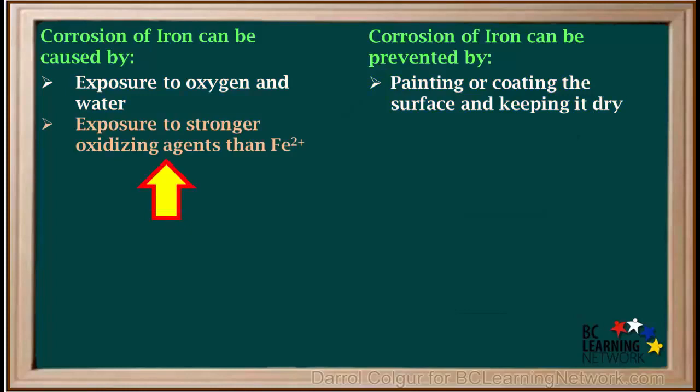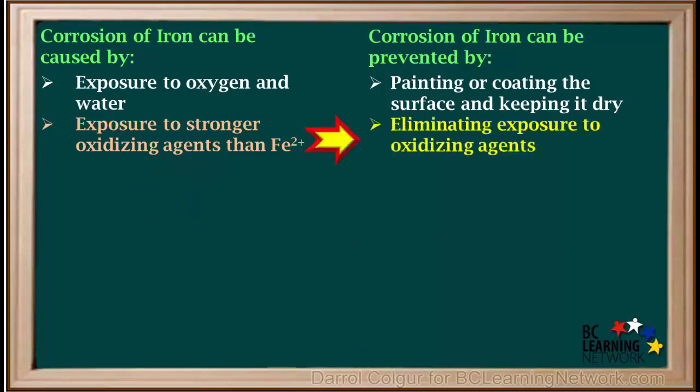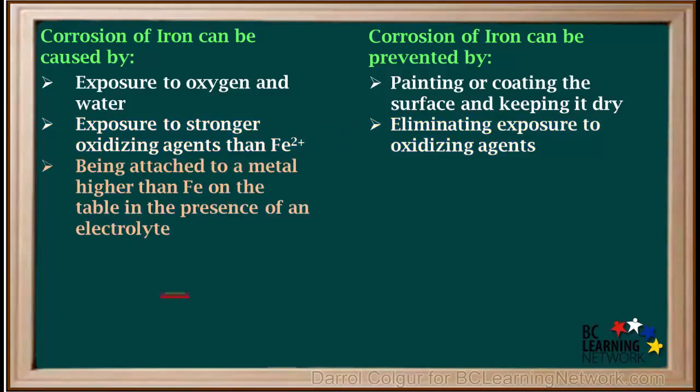Another cause of corrosion of iron, or steel, is exposure to any stronger oxidizing agent than Fe2+. This includes all the species above Fe2+ on the left side of the reduction table. So we must eliminate exposure of iron or steel objects to these oxidizing agents.